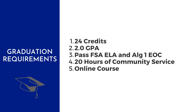Here is an overview of the graduation requirements. In order to earn a high school diploma, students must earn 24 credits and have a minimum 2.0 GPA. They must pass the 10th grade FSA ELA and the Algebra I EOC, complete 20 hours of community service, and complete at least one online course.